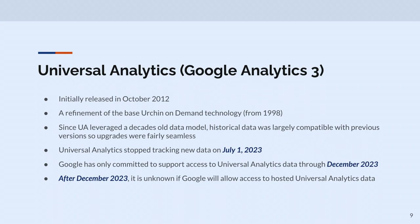Universal Analytics — we might colloquially call GA3 — was released in 2012, over a decade old. It was really just a refinement of older technology. Upgrades between previous versions of Analytics were pretty painless. And it stopped tracking last week. So if you didn't know that, it's not tracking any more data. Google's only committed to providing that data through December of this year — maybe they'll extend it. Analytics 360, the paid Universal Analytics service, has more runway, so they may not shut it off entirely, but it's unknown.